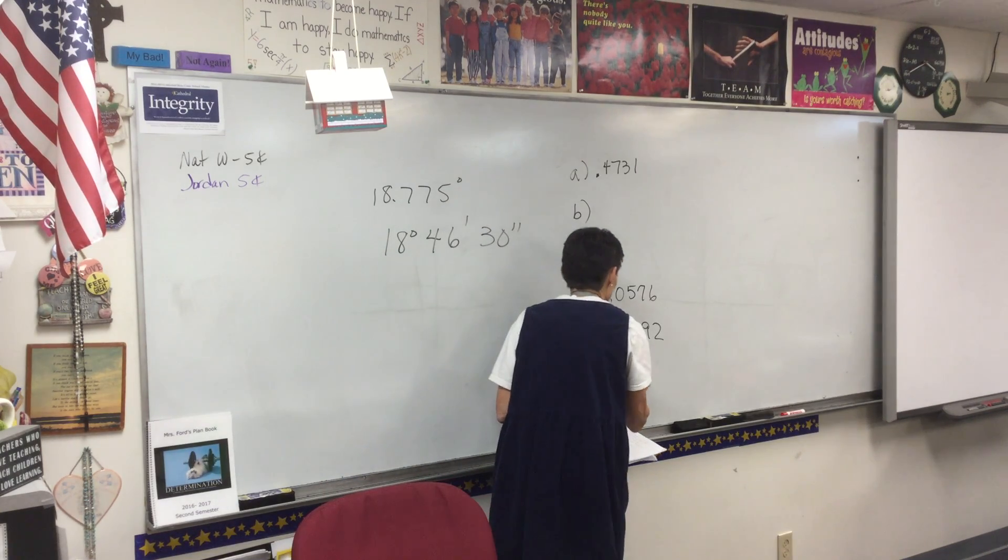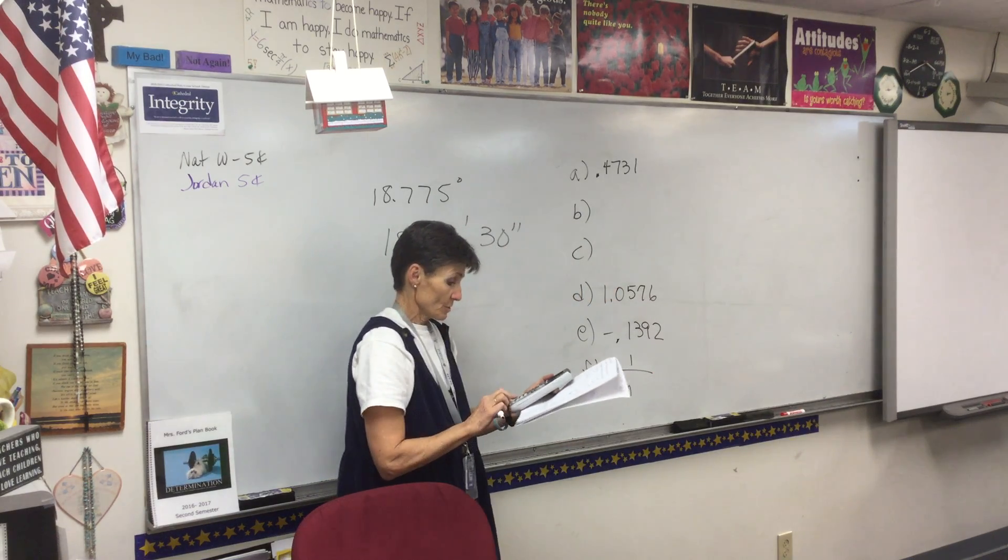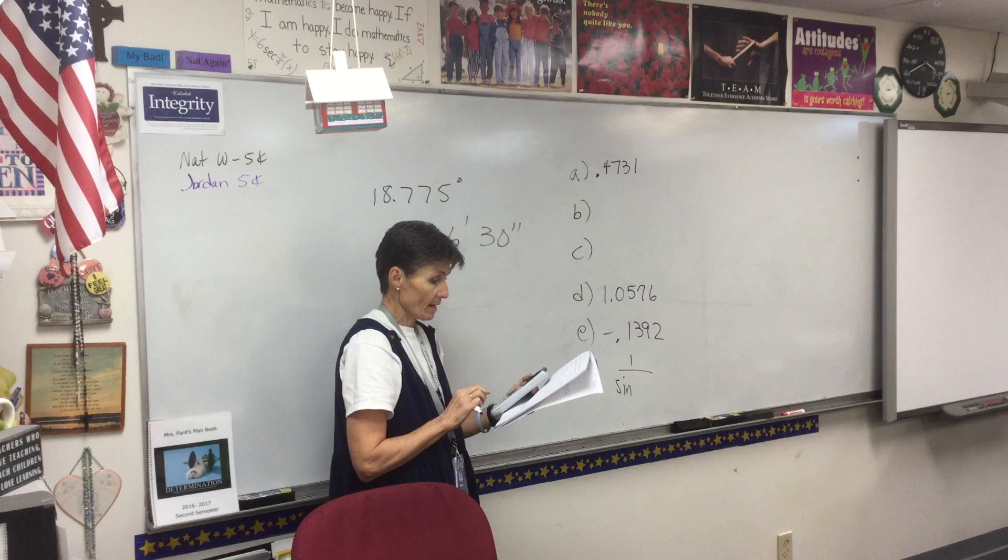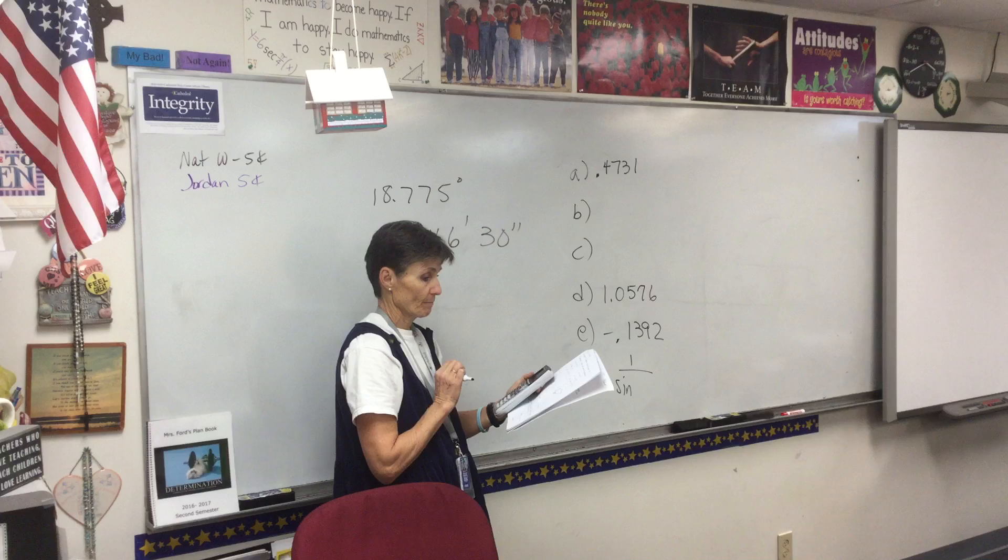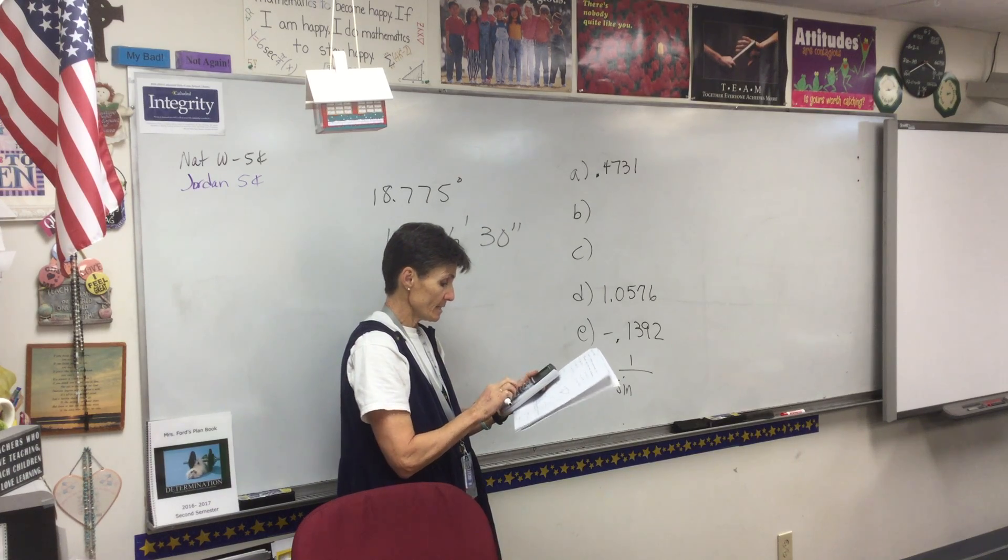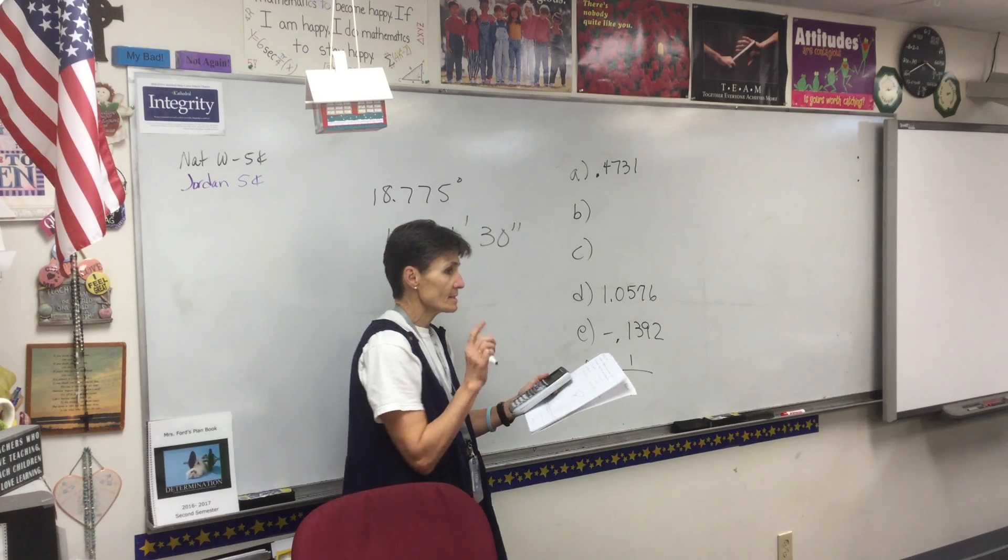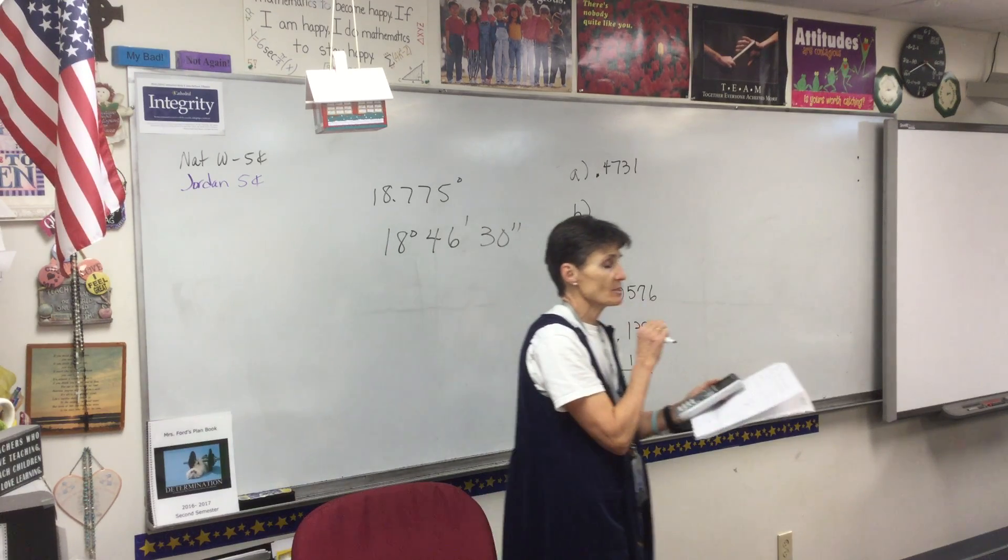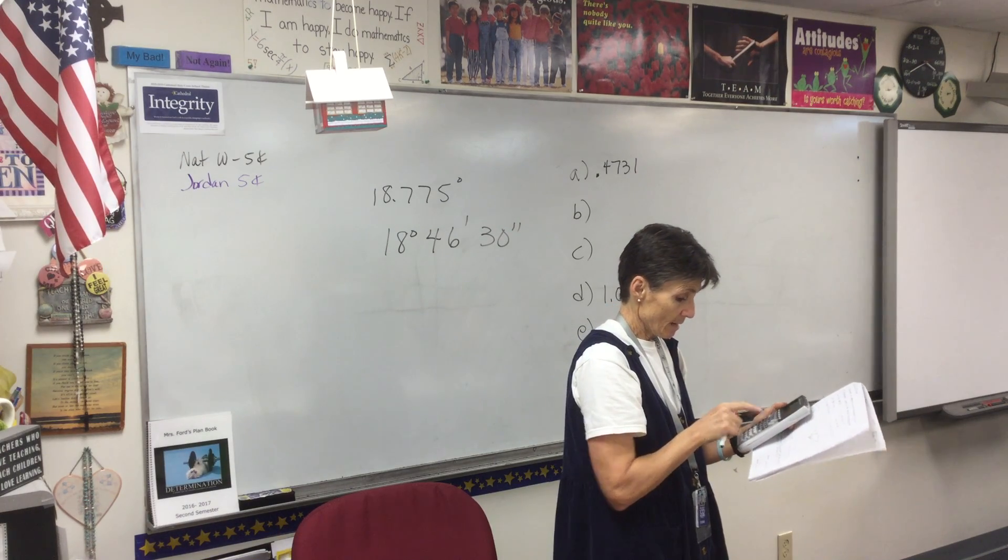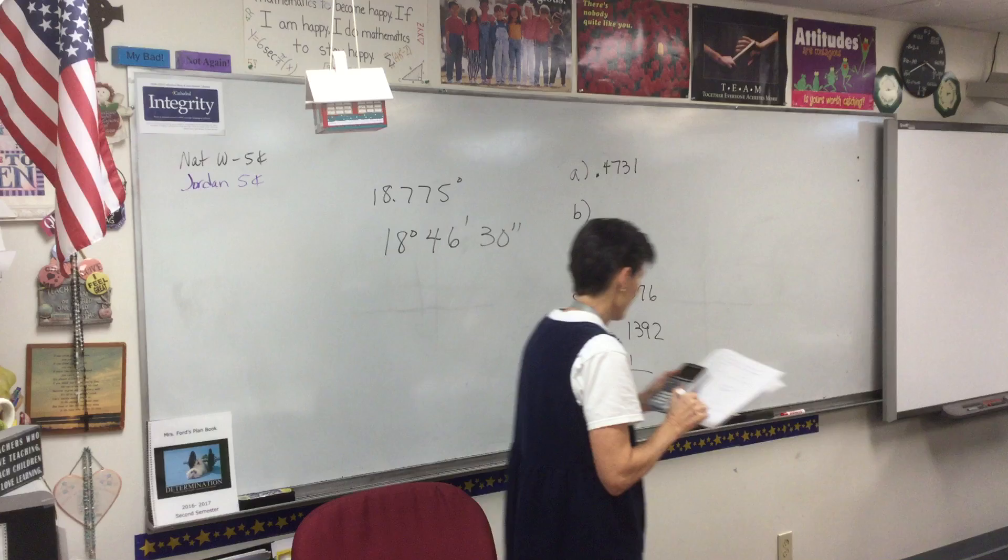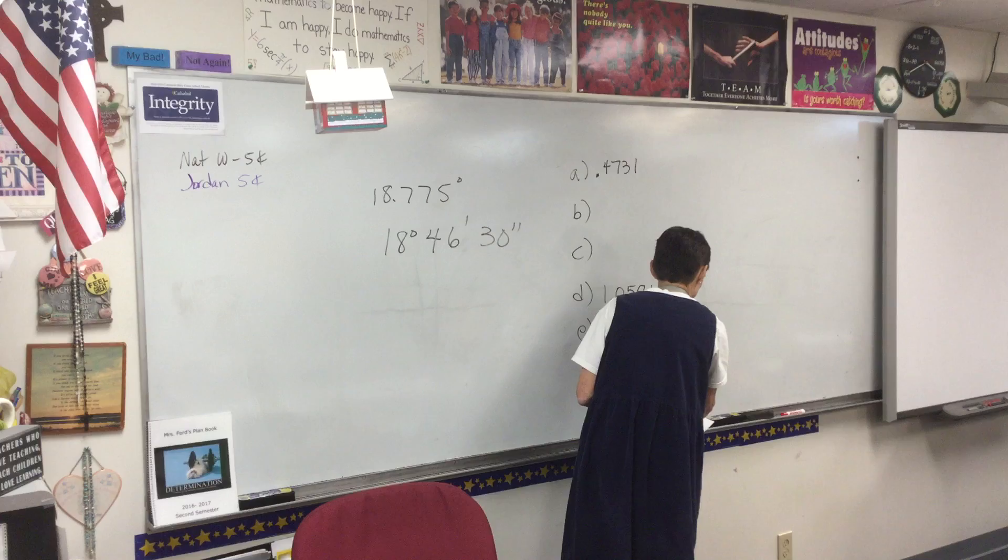Now F is going to be 1 divided by sine, right? So 1 divided by sine 15 degrees, 19 minutes, and 11 seconds. And remember, seconds is the tricky one. Where do we get it? Alpha plus. And you should have gotten 3.7849 for that one.